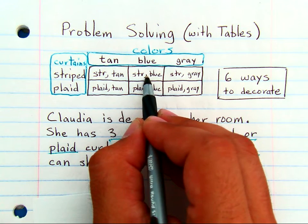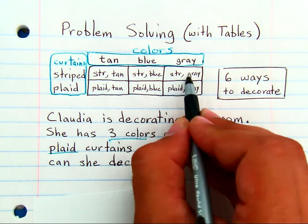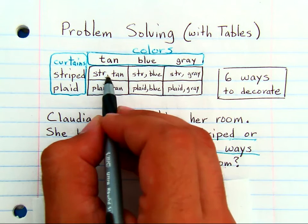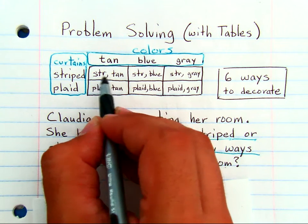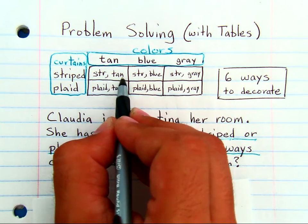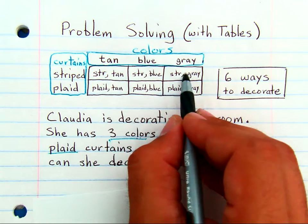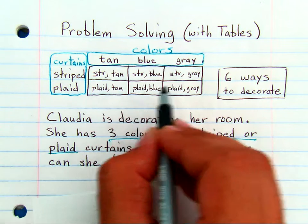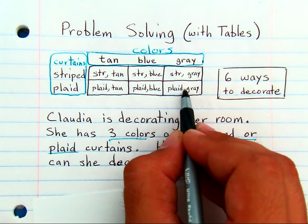So in each box I put 'str' for striped and tan, so you can see that's one combination. The total number of combinations you can now see is six. There are six ways to decorate given three colors and two types of curtains.